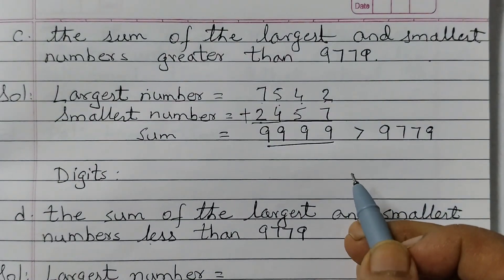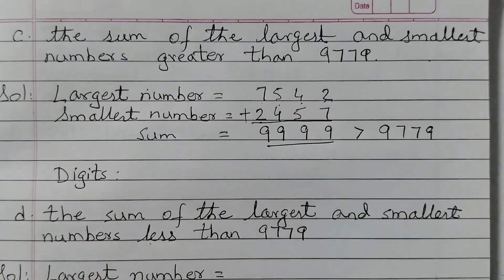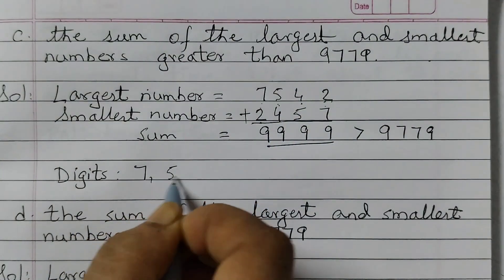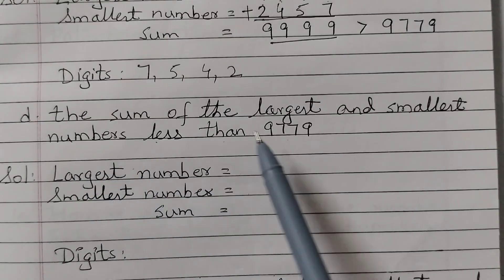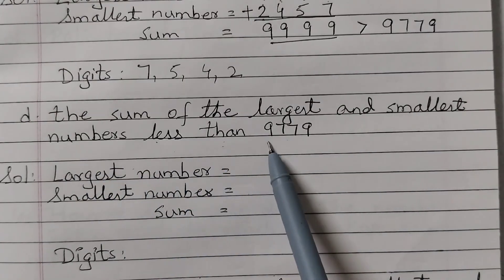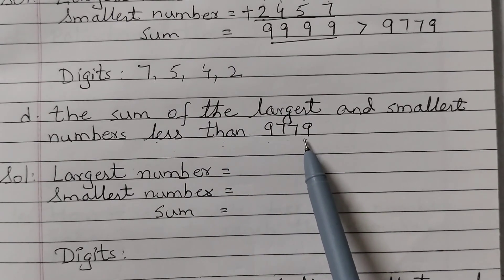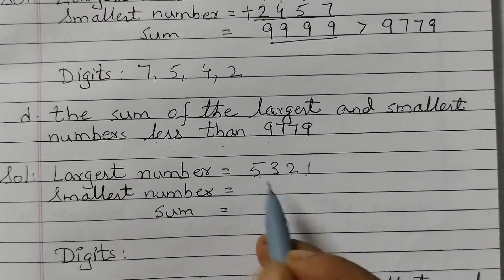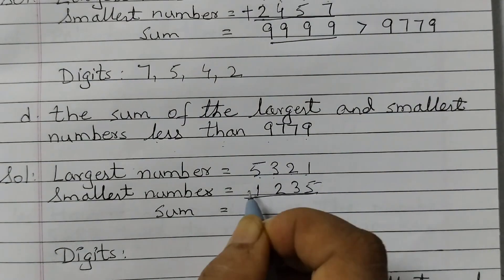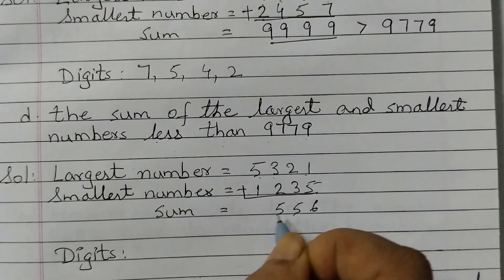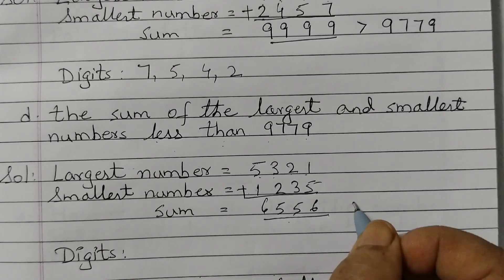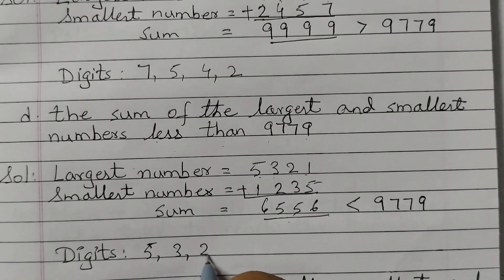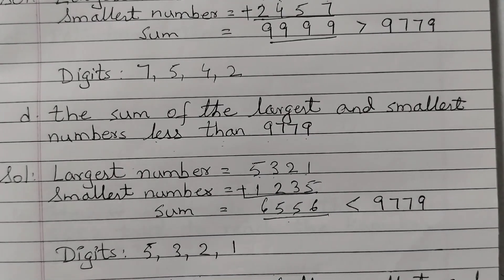For all these questions your answer can be different because there is no fixed answer. You can have different numbers and different digits. The digits we got here are 7, 5, 4 and 2. For part D, the sum of the largest and smallest numbers should be less than 9,779. Using digits 5, 3, 2, 1: the largest is 5,321 and the smallest is 1,235. When we add them up we get 6,556, which is less than 9,779. So the digits are 5, 3, 2, 1. Again the numbers and digits can be different.